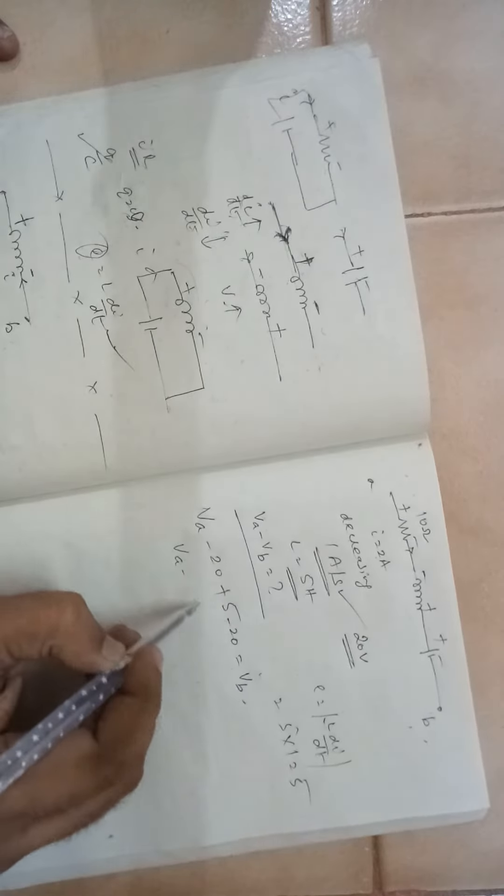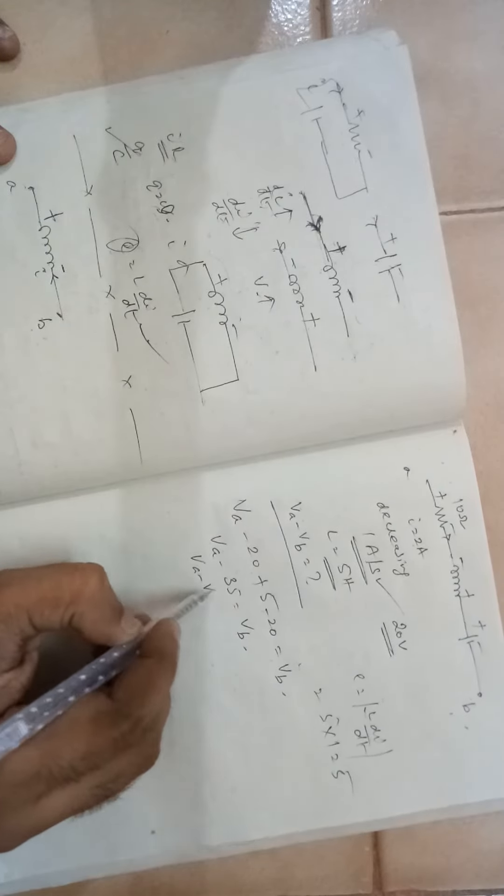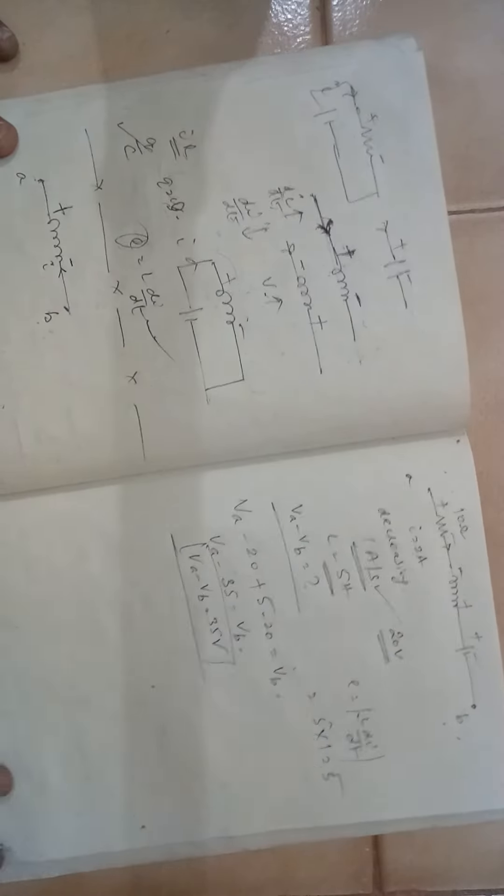So it is VA minus 35 is equal to VB, or VA minus VB is equal to 35 volts. This should be the approach.